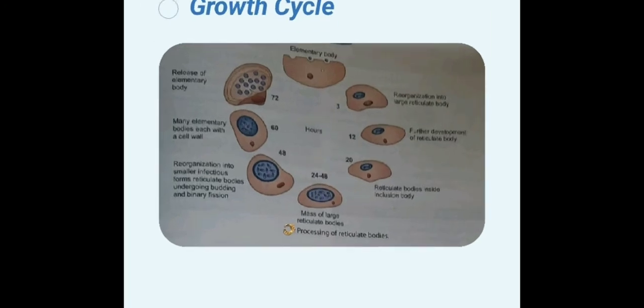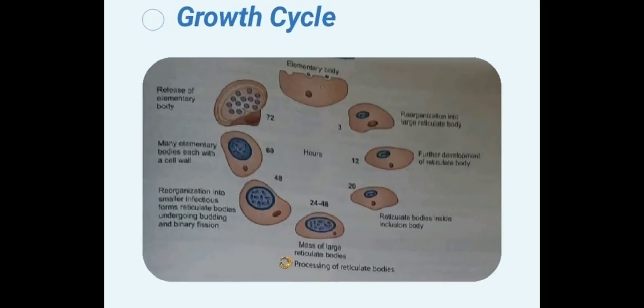Now the time for growth cycle. Initiation of the infection takes place by the attachment of the elementary body to the susceptible host epithelial cell followed by its endocytosis. Throughout its active growth, the elementary body remains within the endosome and separated from the host cytoplasm.